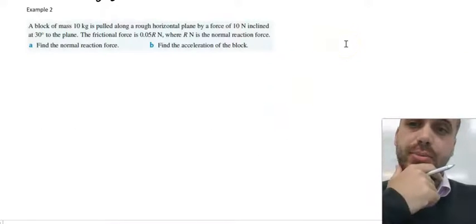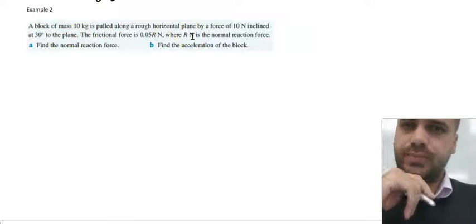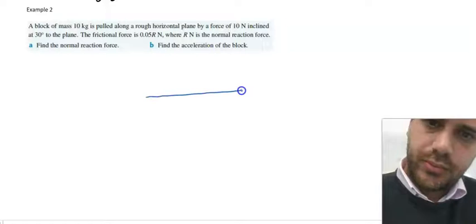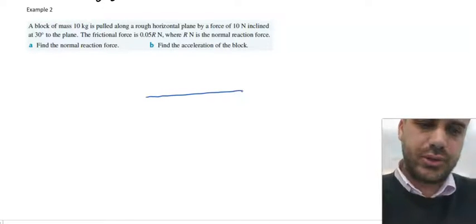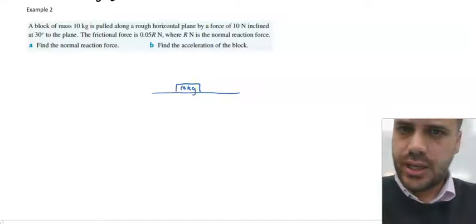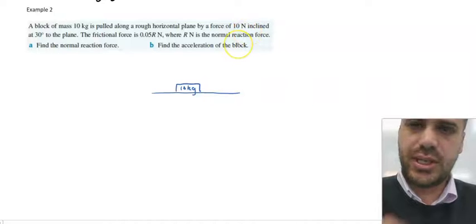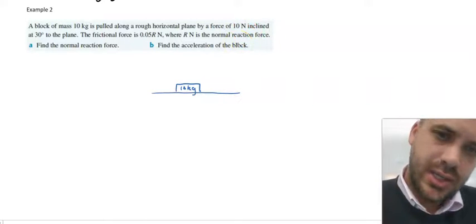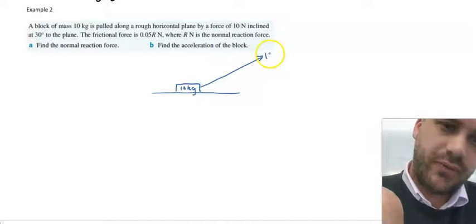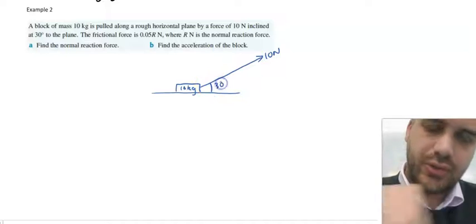All right, now this question is going to take a bit more work. Read through the question, then we'll jump in and draw a picture. We've got a flat plane, a horizontal plane, and an object sitting on the plane that is 10 kilograms. It's being pulled along by a force of 10 newtons that's inclined to the plane at 30 degrees. So we have a string here that's pulling it at a force of 10 newtons, and there's an angle here of 30 degrees.